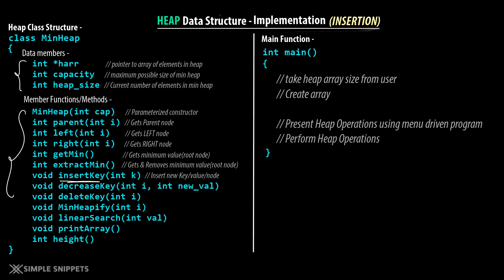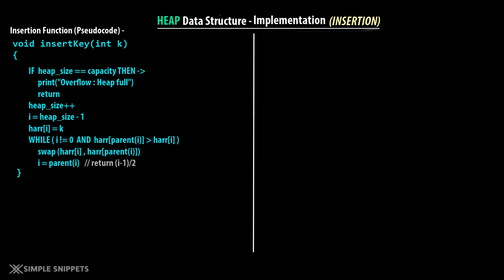Make sure you watch this video till the end. On the left-hand side of the screen we have the entire pseudocode for insert key — that is, inserting a value in the heap data structure. I'm assuming you already know what a heap data structure is, what a min heap and max heap are — we've already discussed all that in the previous tutorial, so make sure you watch that.